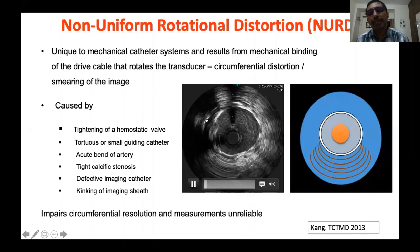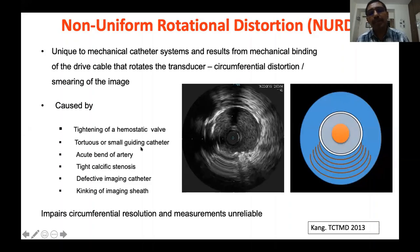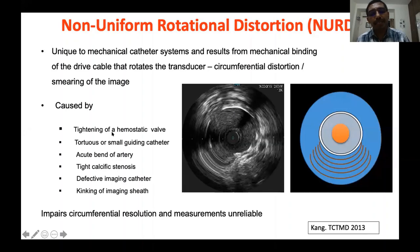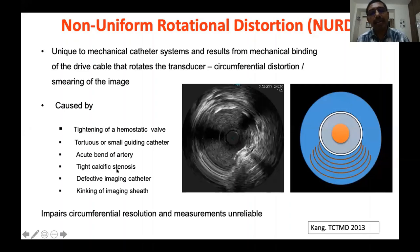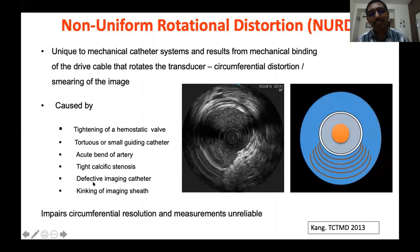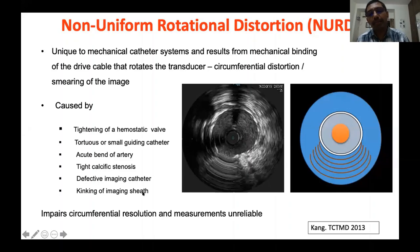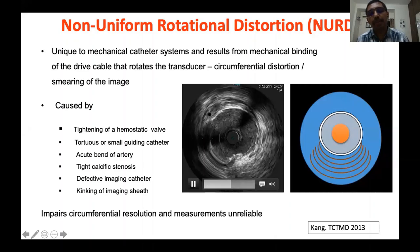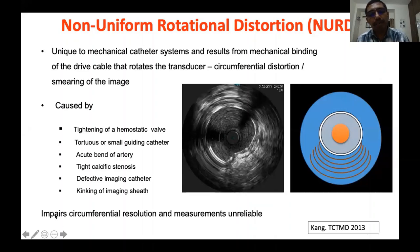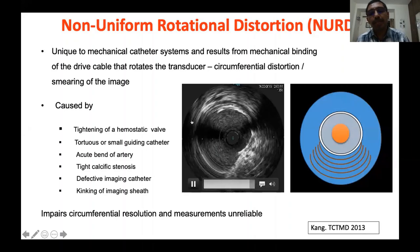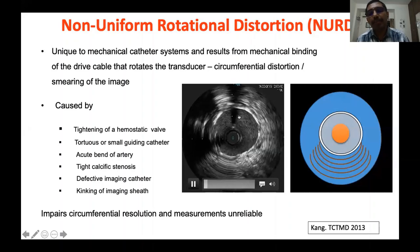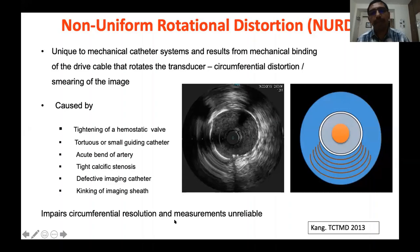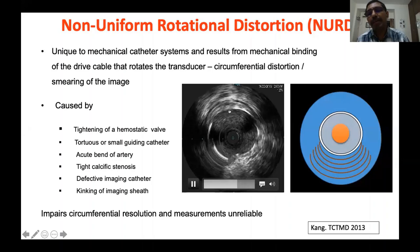NURD is caused by: tightening of the hemostatic valve if too tight, use of tortuous or small guiding catheters (5 French guiding catheter or guide catheters with multiple curves such as Amplatz catheters), acute bends in the artery, tight calcific stenosis, and most commonly in our setup — defective imaging catheter due to repeated use. These result in non-uniform rotational deformation. The clinical importance: it impairs circumferential resolution and makes measurements unreliable. It does not occur in phased array systems because they have no rotating element.